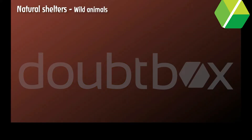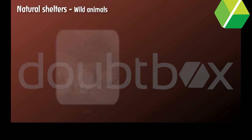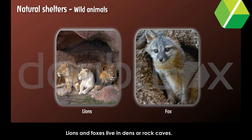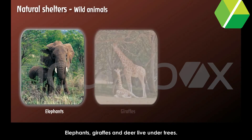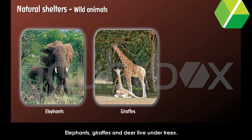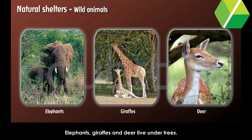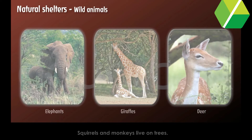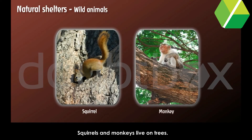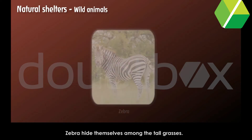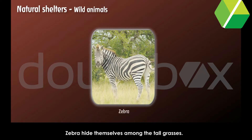Wild Animals. Lions and foxes live in dens or rock caves. Elephants, giraffe and deer live under trees. Squirrels and monkeys live on trees. Zebras hide themselves among the tall grasses.